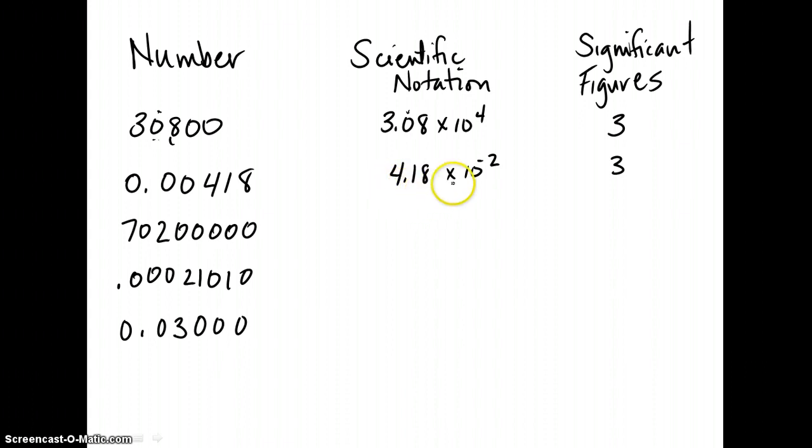So four point one eight is significant. And I just wrote the exponent to be incorrect. So it looks like I had to move the decimal place three times in the negative direction. So you have 4.18 times 10 to the negative third, not the negative second. And you have three significant figures.